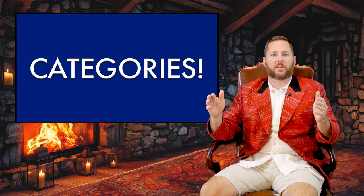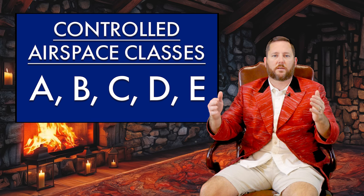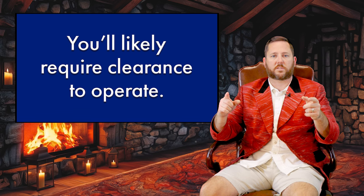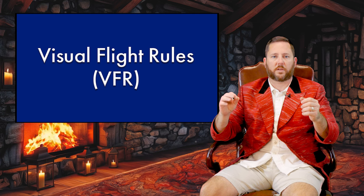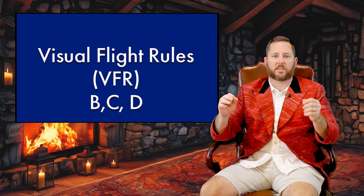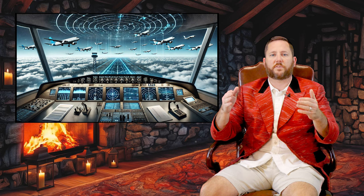Now that we know the basic difference, let's break down each category a bit more. In controlled airspace, ATC provides separation services to ensure aircraft maintain safe distances from one another. This includes guidance on flight paths, altitudes, and clearances for takeoff and landing. Controlled airspace is divided into several different classes: A, B, C, D, and E. In these areas, you'll need to communicate with ATC, especially before entering the airspace, and you'll likely require clearance to operate. Instrument flight rules, or IFR, are the standard, but visual flight rules, or VFR, can also apply in lower classes like B, C, and D. ATC is actively involved in managing traffic in these spaces, keeping everyone safe and ensuring orderly flow.